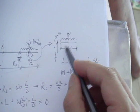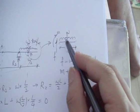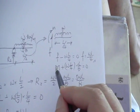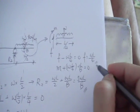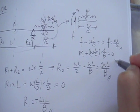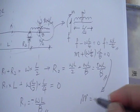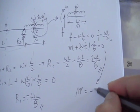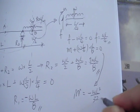This moment and this moment are both acting in a clockwise direction, so they are of the same sign. Adding them up and setting the sum to zero gives the bending moment M.